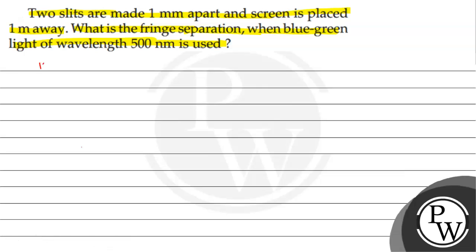First of all, we will see what will be the key concept in the question. The key concept in the question will be fringe separation or fringe width. The formula is beta equals lambda times D divided by d.